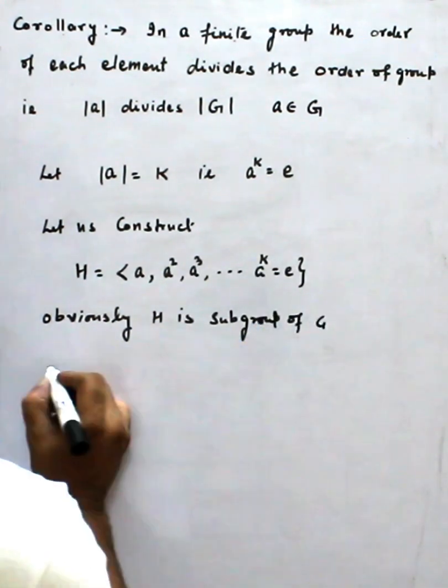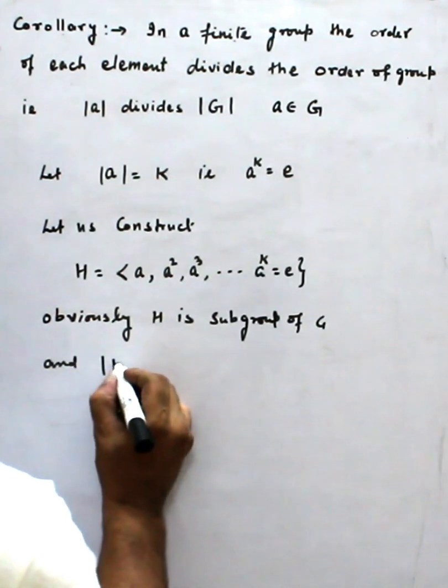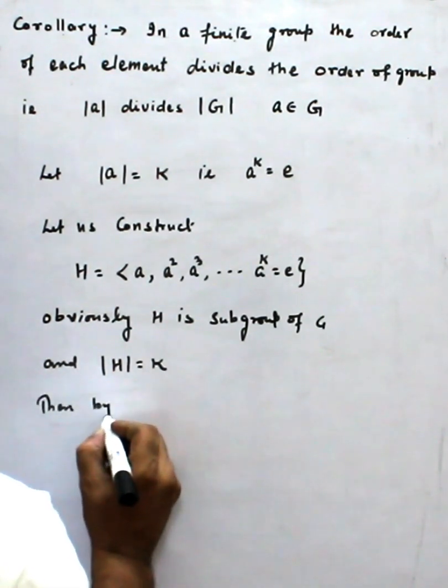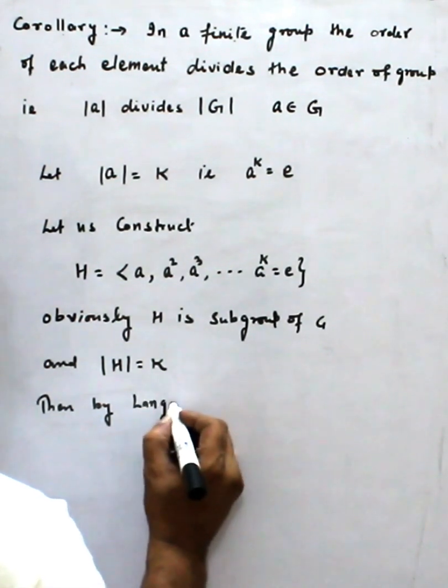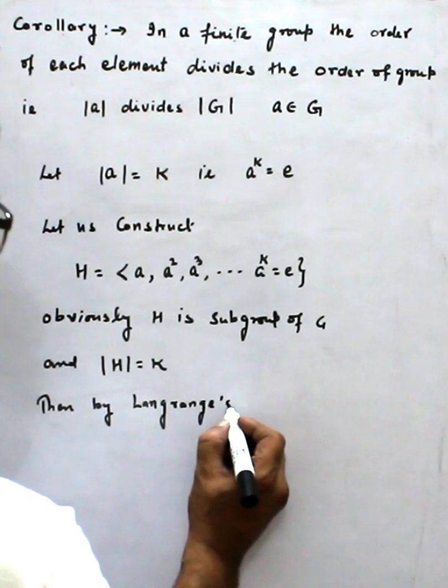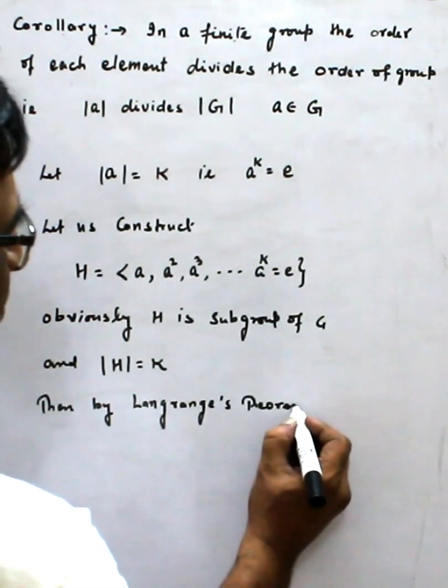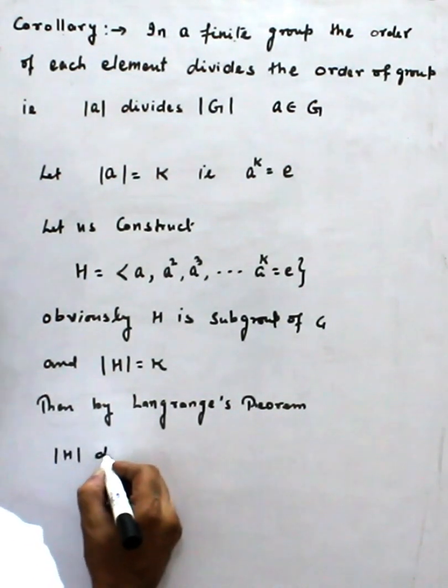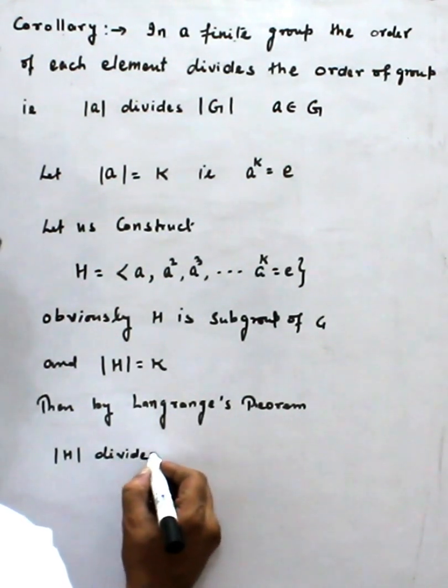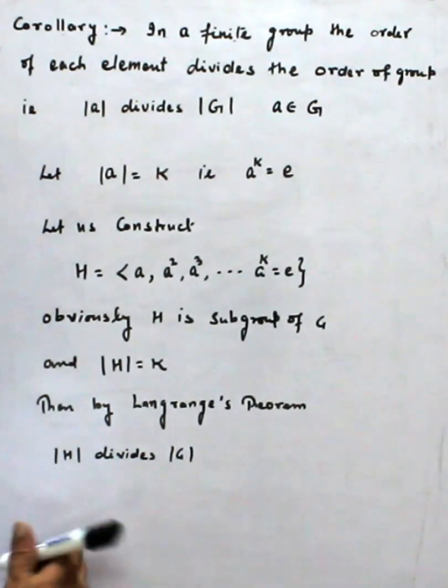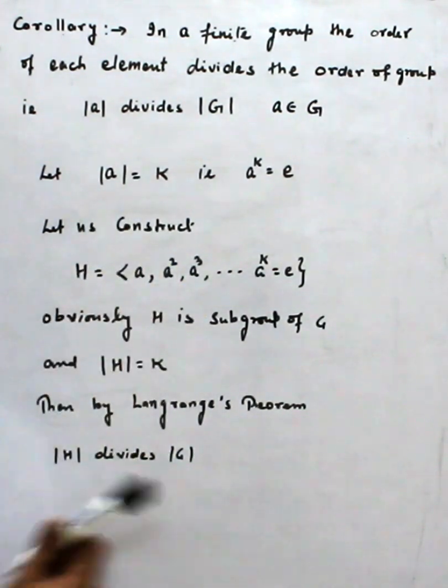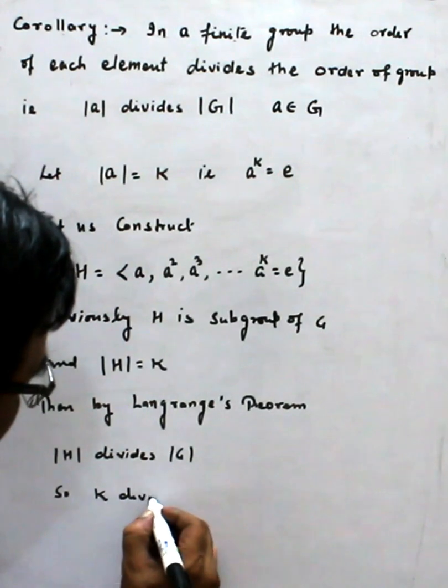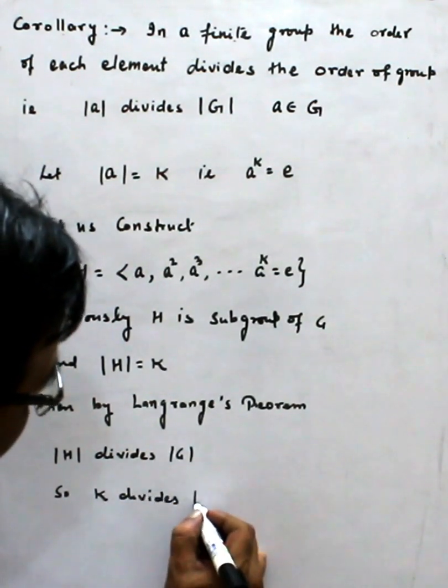H is a subgroup of G and order of H is equal to K. Then by Lagrange's theorem, order of H divides order of G. And order of H equals order of A which is equal to K. So K divides order of G.